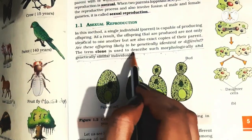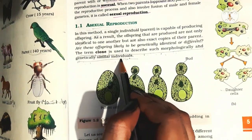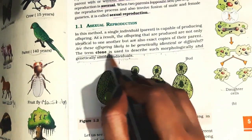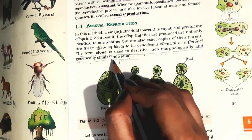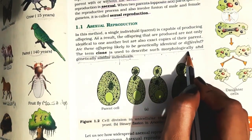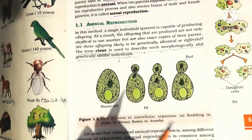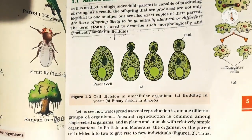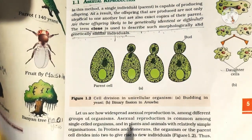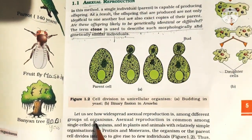The term 'clone' is used to describe such morphologically and genetically similar individuals. Let us see how widespread asexual reproduction is among different groups of organisms.